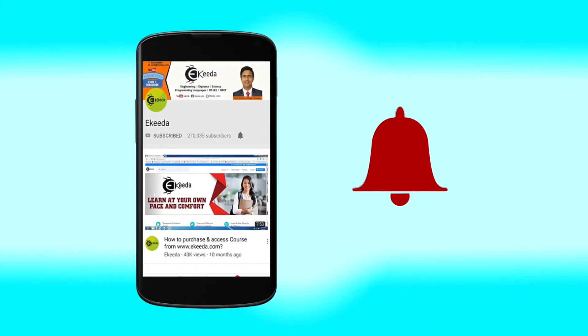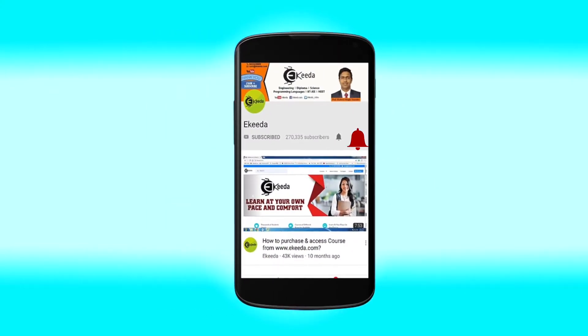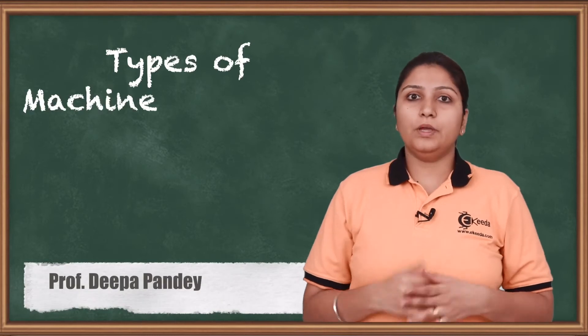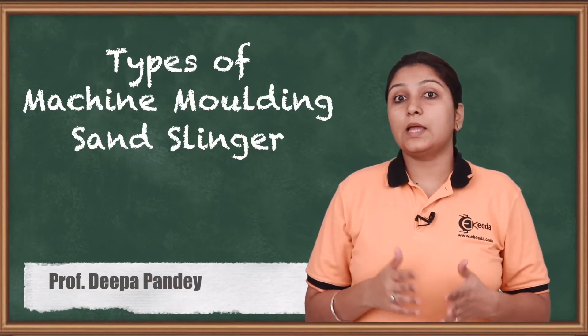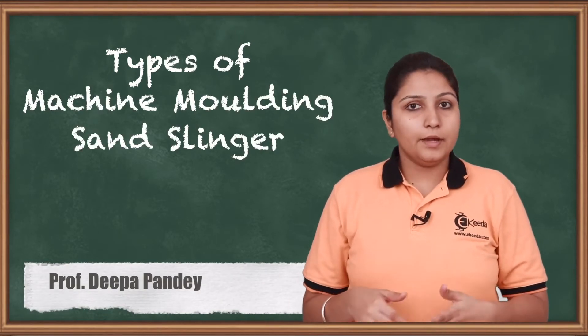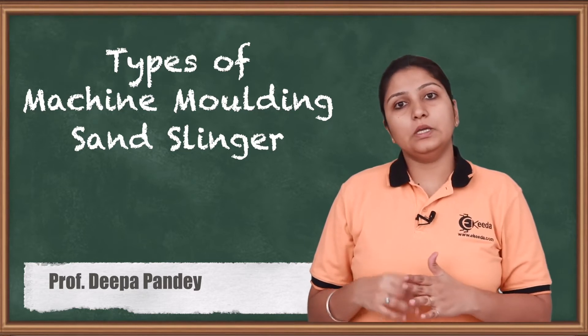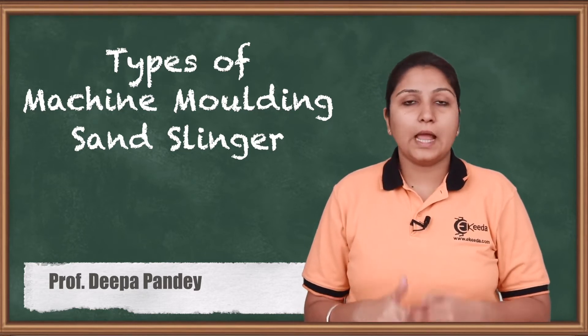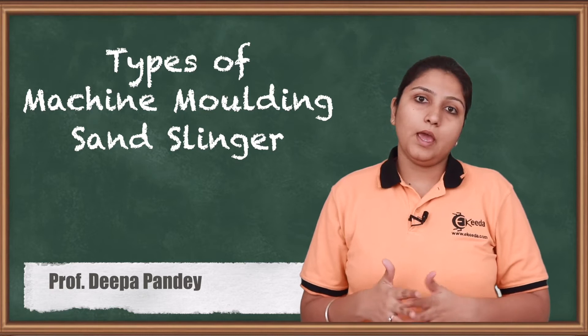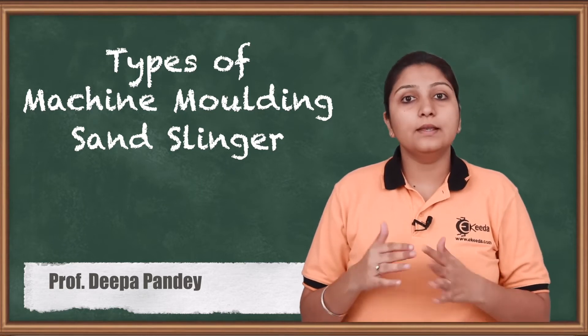Click the bell icon to get latest videos from Keeda. Hello friends, today I am going to start the topic which is types of machine molding. One type of machine molding is sand slinger, so I'm going to take sand slinger as a part of my topic.